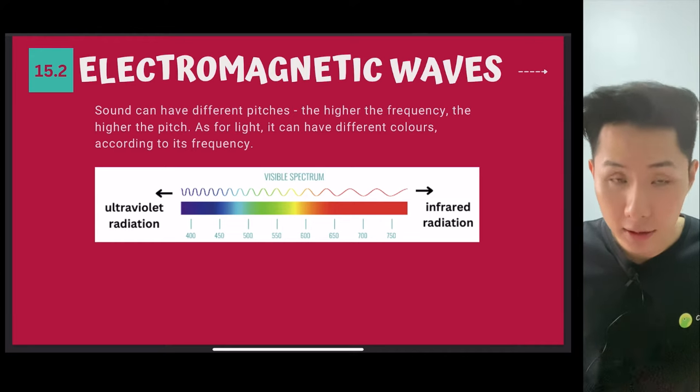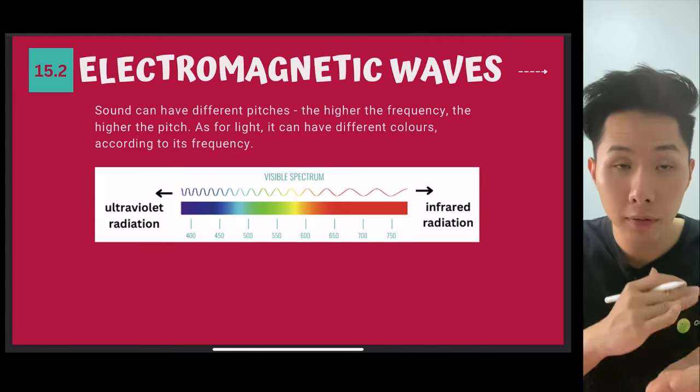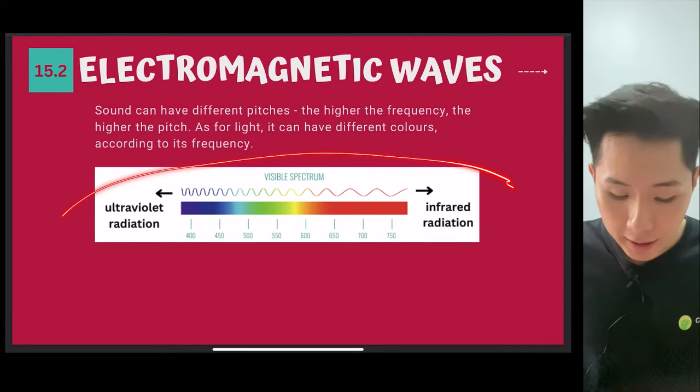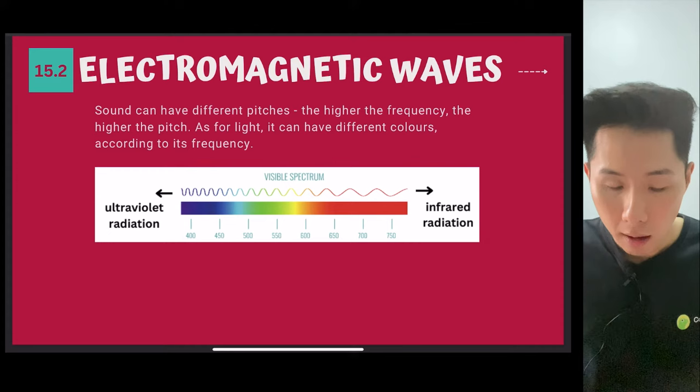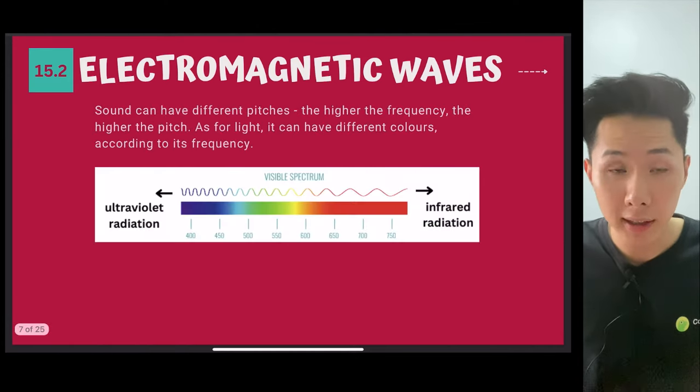So just like sound, light can have different pitches, different frequencies and also wavelengths. In sound, frequency represents the pitch, whereas in light waves like that, frequency could determine its color and also its position in the electromagnetic spectrum.